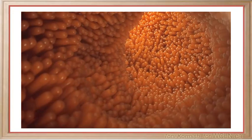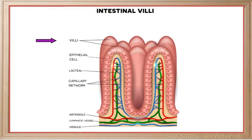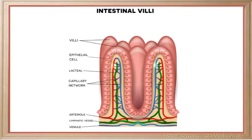known as villi, contain many more folds, known as microvilli, which contain a set of small blood vessels and part of the lymphatic system, known as the lacteal. These blood vessels and the lacteal are used in the transportation of nutrients, which are absorbed from the surface cells of the small intestine.